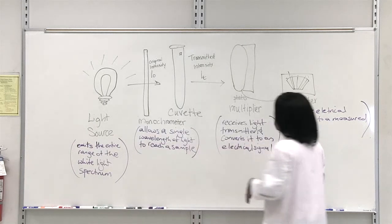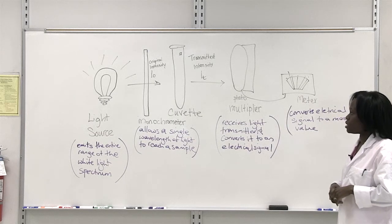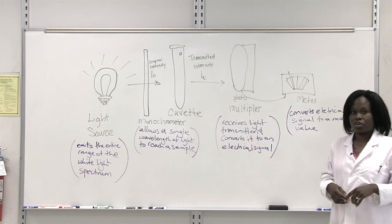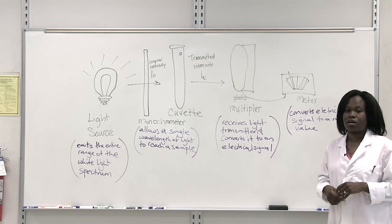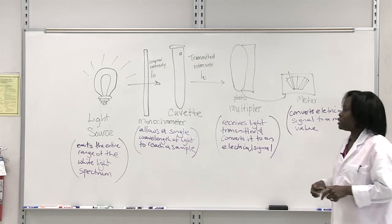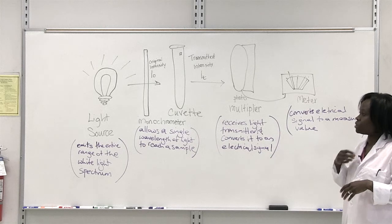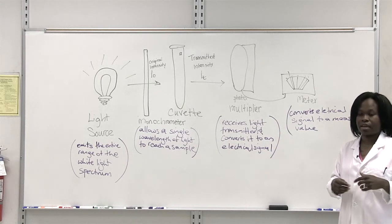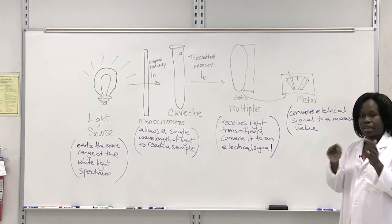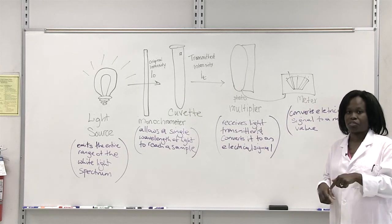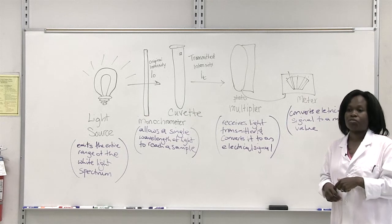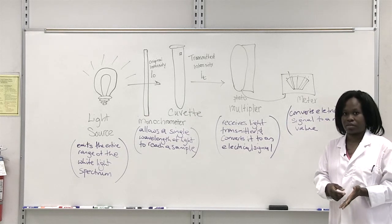And what is also important is when you are measuring your particular dye, you need to have what is called a blank which will subtract whatever residual light is going to be absorbed by the solution that your dye is in. Because you just want the absorbance of your dye itself. You don't want the absorbance of your dye plus the solution it is in.